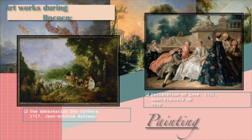The second painting is The Declaration of Love, 1731, by Jean-François Detroy. In this jovial oil painting, a group of ladies and gentlemen pause outside a garden as one of the young men kneels and presents his beloved with a corsage.